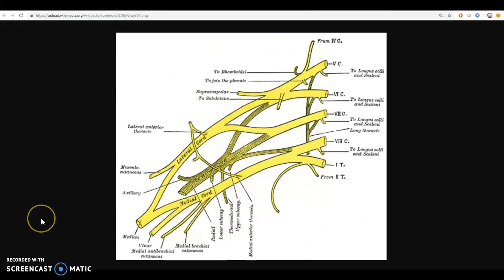Okay, A&P students, this is just a quick view of the brachial plexus, the series of nerves going out from the spinal cord out to the upper limb.